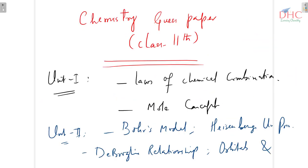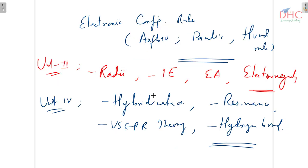To recap: unit 1 is basic concepts in chemistry — laws of chemical combination and mole concept. Unit 2 is atomic structure — Bohr's model, Heisenberg's uncertainty principle, de Broglie relationship, orbitals, and electronic configuration rules: Aufbau principle, Pauli's principle, and Hund's rule. Unit 3 covers atomic radii and ionic radii.